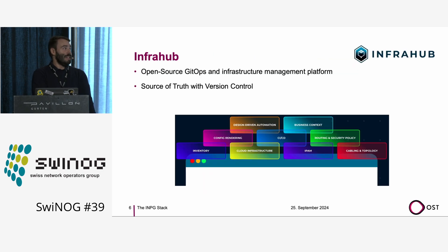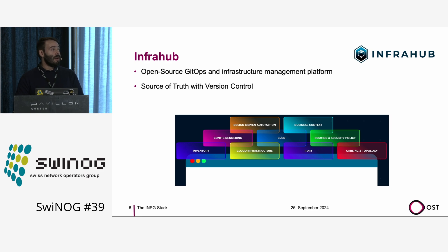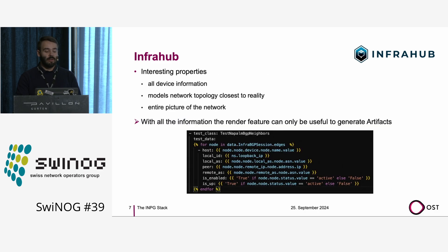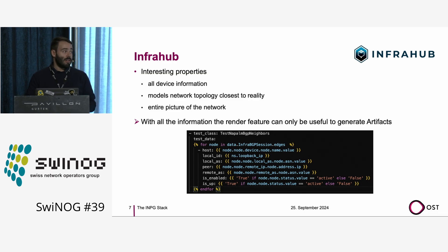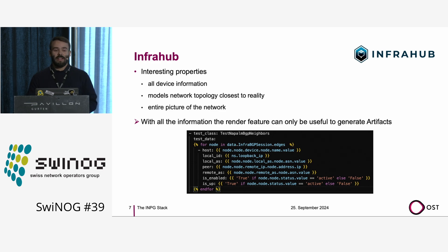The first thing in my tool chain is InfraHub. I use it as my source of truth — all my devices, all the information, all the IP addresses, everything I need. It also has built-in version control, which could in a further use case help me test my network if I try to change something. It has a cool feature which renders artifacts. I can define for every single device or device group an artifact, which I can define with Jinja or Python, and it generates a YAML. This gives me a way to generate my testing config. Writing testing configs by hand is a little tedious and nobody likes it, so we love this feature.